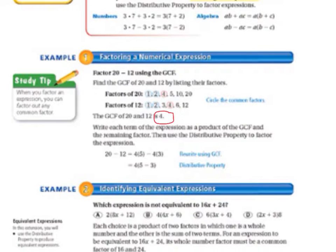Write each term of the expression as a product of the greatest common factor and the remaining factor. Then, use the distributive property to factor the expression. It looks like this: 20 minus 12 equals 4 times 5, because that equals 20, minus 4 times 3, because that equals 12.